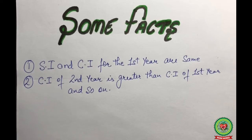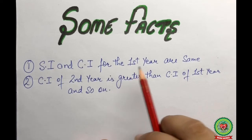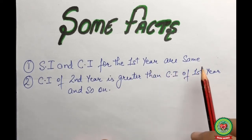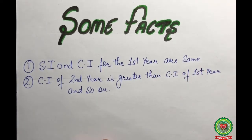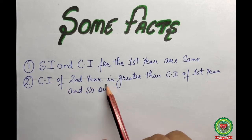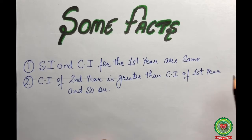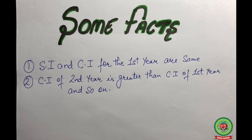Let us discuss some facts about simple interest and compound interest. The first fact is that simple interest and compound interest for the first year are the same, provided the principal and rate are both the same. The second fact is that the CI of the second year is greater than the CI of the first year, and so on.